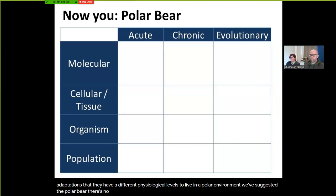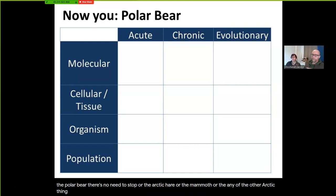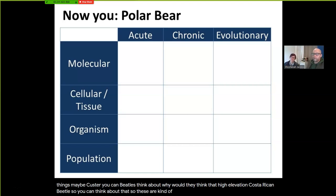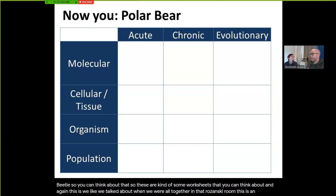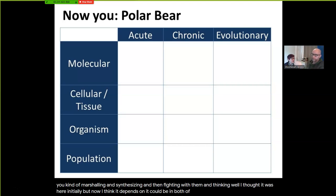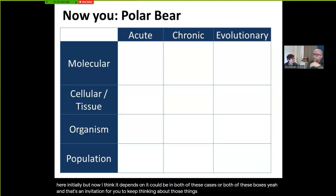This is something you can take away and think about: biological levels of organization and the adaptations that polar animals have at different physiological levels. We've suggested the polar bear, but you could think about Antarctic ice fish, Arctic hare, mammoth, or even Costa Rican beetles at high elevation. These worksheets invite you to marshal the facts, integrate and synthesize them, and wrestle with placement — realizing something might fit in multiple boxes. That's an invitation to keep thinking, not just for the exam but for your life as a scientist.